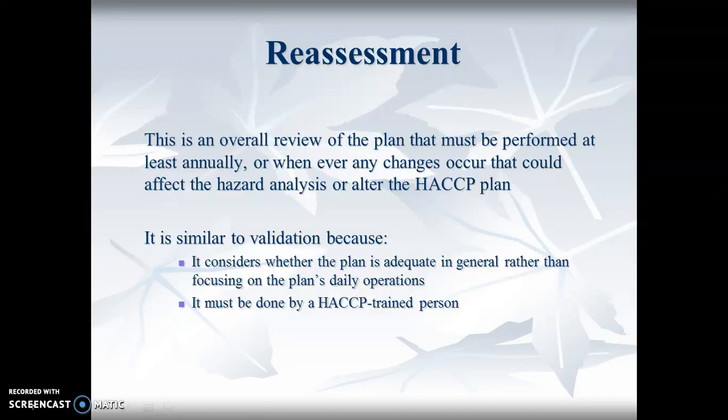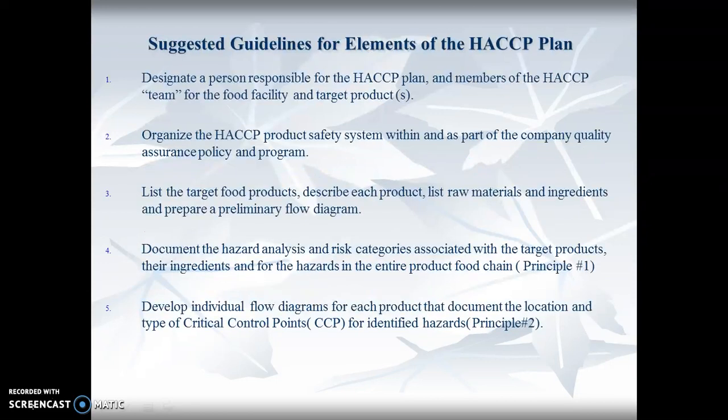Ongoing verification is similar to validation in that it considers whether the plan is adequate generally rather than focused on the plan's daily operations. It must be done by a HACCP-trained person. Suggested guidelines for elements of the HACCP plan include a designated person responsible for the HACCP plan, members of the HACCP team, and organizing the HACCP product safety system within the company quality assurance program.